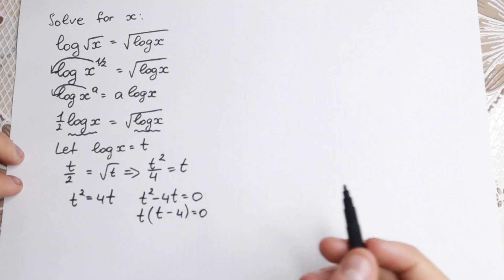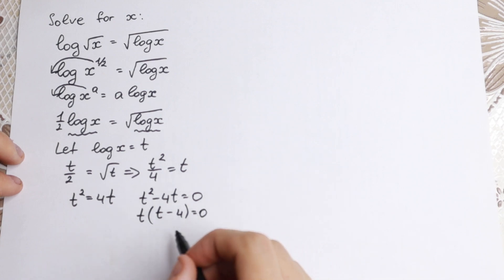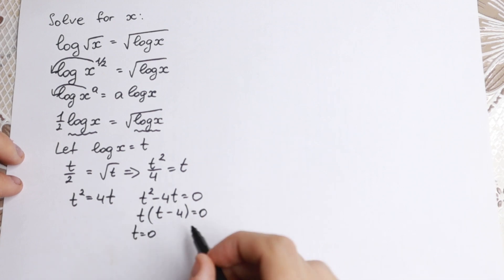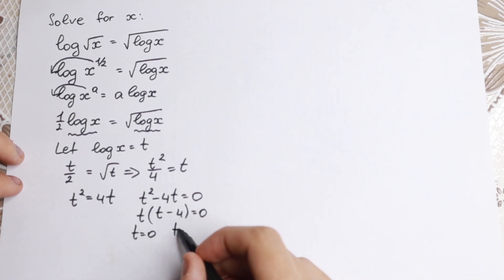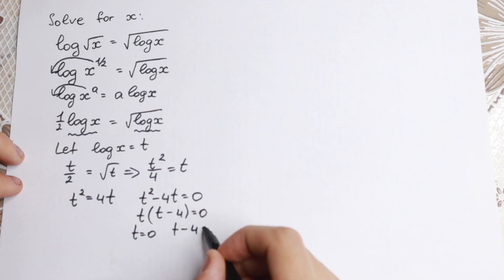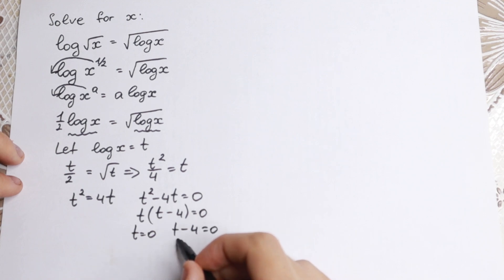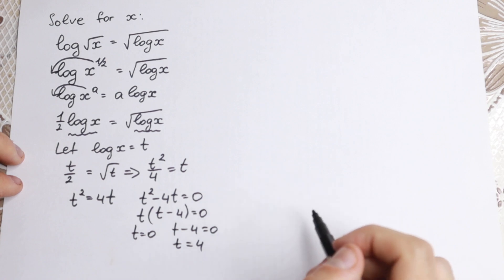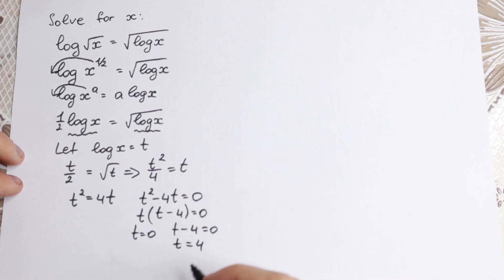We factor: t times (t minus 4) equal to 0. So we have two roots. The first one: t equals 0. The second one: t minus 4 equals 0, which gives us t equals 4.